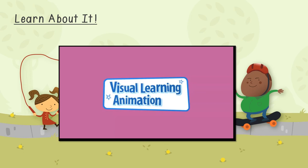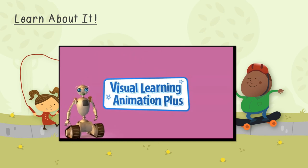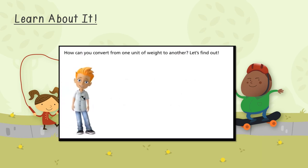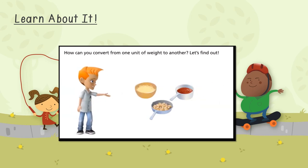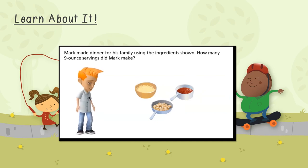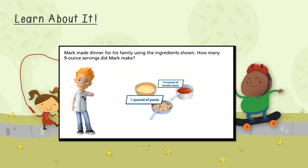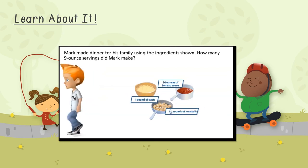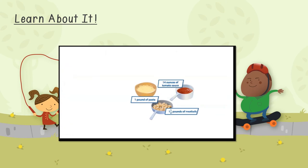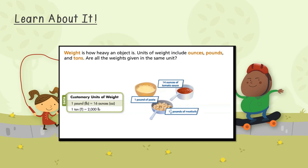Now let's go back to our friends at Pearson for more on equivalence with customary units of weight. As you watch and listen, continue to think about the strategies that you can use to convert from one unit to another. How can you convert from one unit of weight to another? Let's find out. Mark made dinner for his family using the ingredients shown. How many nine-ounce servings did Mark make? Weight is how heavy an object is. Units of weight include ounces, pounds, and tons.